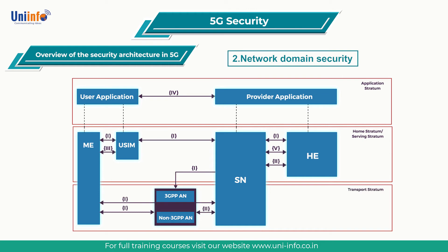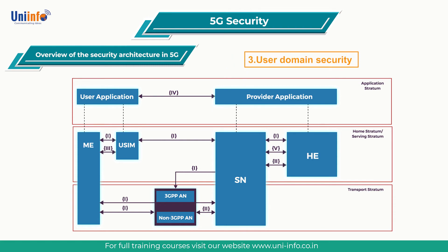Network domain security is the set of security features that enables network nodes to securely exchange signaling data and user plane data. User domain security is the set of security features that secure the user's access to mobile equipment.